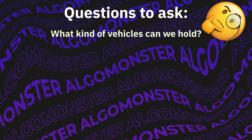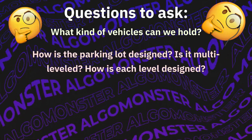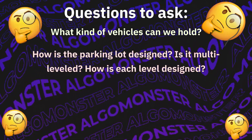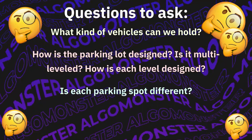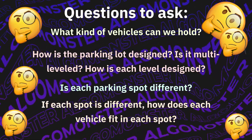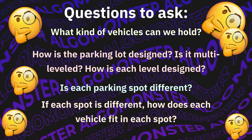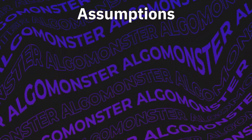When an interviewer gives you this question, the first step is to handle the ambiguity. For example: what kind of vehicle can we hold? How is the parking lot designed? Is it multi-level? How is each level designed? Is each spot different, and if so, how does each vehicle fit in each spot? For this question, let's make the following assumptions.